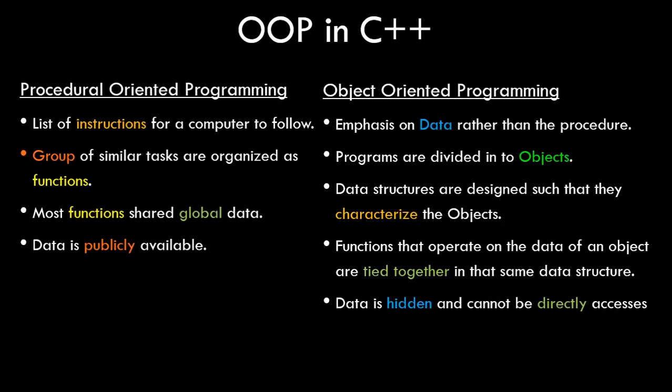So what does object oriented programming do? In OOP, the emphasis is more on data rather than the functions that operate on that data. Programs are divided into objects rather than functions, and all data structures are designed to characterize the object. Along with objects, the functions that operate on the data are bundled inside those objects themselves, so data is not directly available throughout the program — it is hidden and cannot be directly accessed.